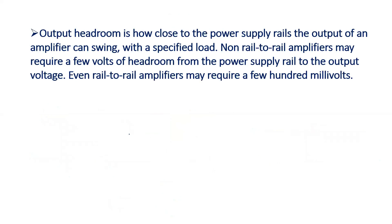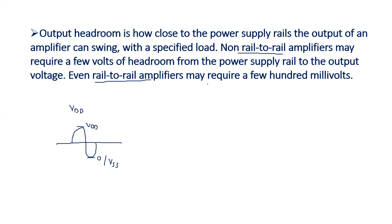For the headroom voltage: if your amplifier is swinging between rail to rail, then the headroom voltage is almost negligible. The headroom is the difference between the maximum supply voltage VDD and the maximum output voltage. For a rail-to-rail amplifier where the output swings very close to VDD down to ground or VSS, this is the rail-to-rail swing, and the headroom is almost negligible — almost zero — because the maximum output voltage can swing near to the power supply voltage VDD.